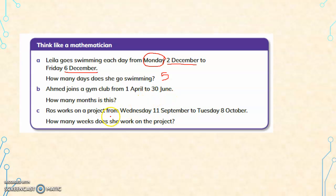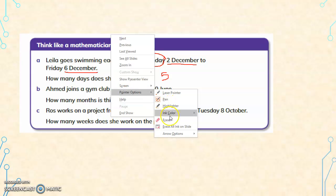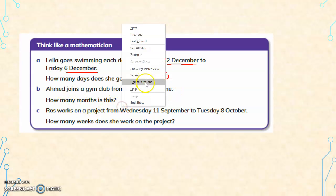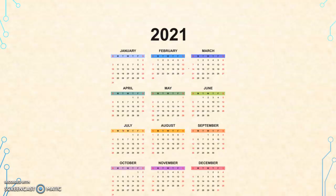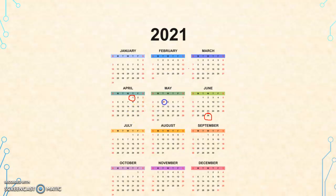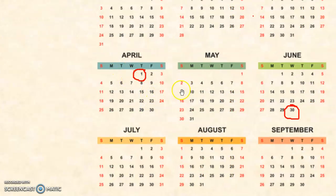Ahmed joins a gym club from 1st April to 30th June. How many months is this? Let us look at the calendar again. From 1st April to 30th June: April is month 1, May is 2 months, June is 3 months — a total of 3 months.